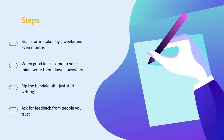In order to start your personal statement, I recommend breaking it down into four main steps. The first step is to brainstorm — this could take anywhere from days to weeks to months. Next, when good ideas come to mind, write them down. After that, rip the bandaid off and just start writing. Lastly, ask for feedback from people you can trust and rely on.